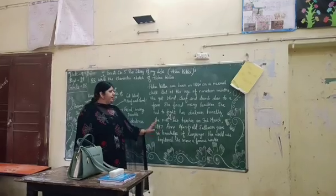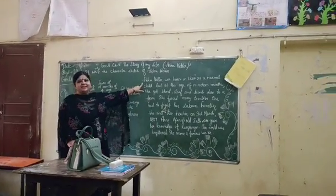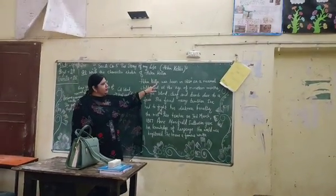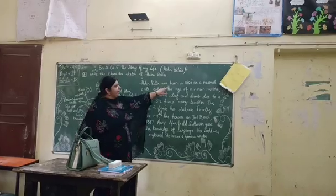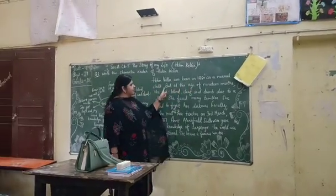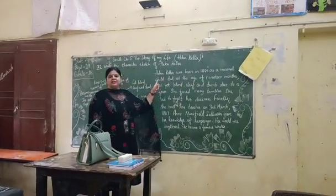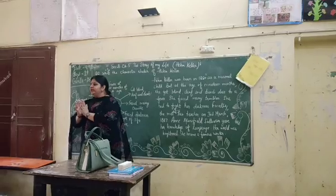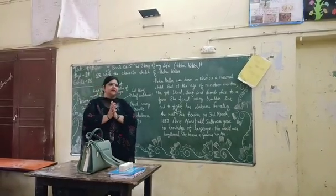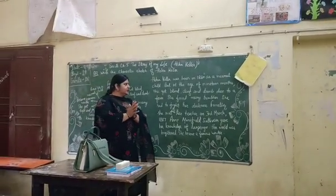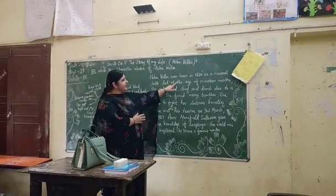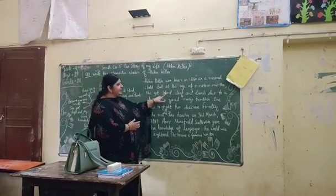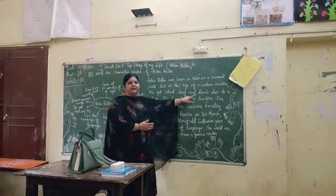Now we will write the character sketch on the basis of this mind map. The first sentence will be: Helen Keller was born in 1880 as a normal child. But at the age of 19 months, she got blind, deaf and dumb.